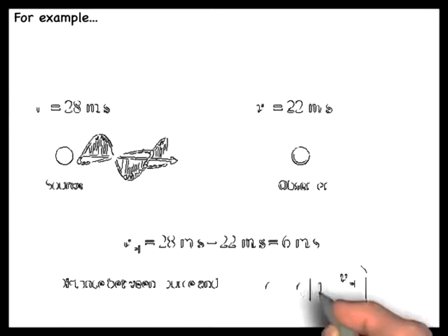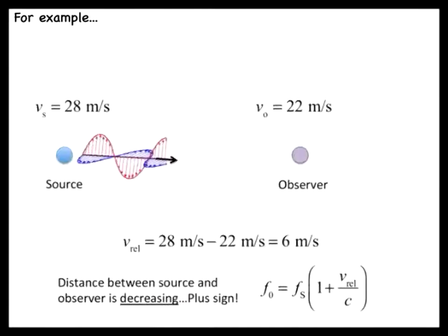For example, suppose that the source and the observer are both traveling due east. The source is moving at a speed of 28 meters per second with respect to ground behind the observer, that is, moving with a speed of 22 meters per second with respect to ground.